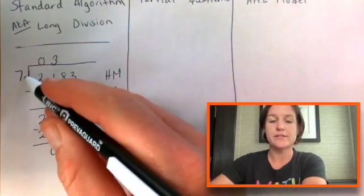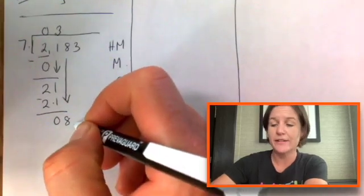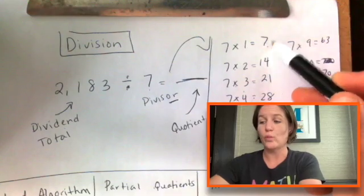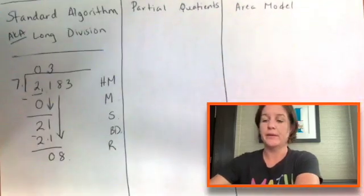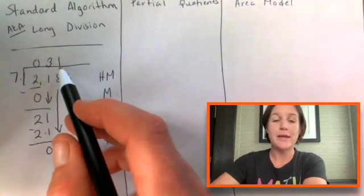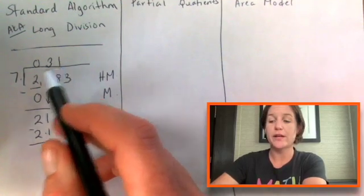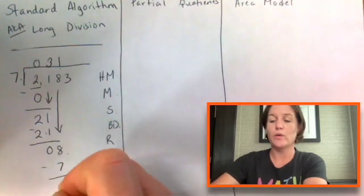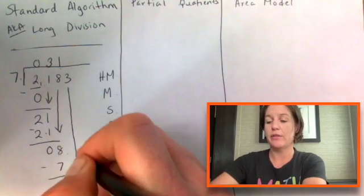How many sevens does it take to get as close as we can to eight? If we go to our chart, as close as we can get is seven. That's one time. So we're going to put times one. That's how many. Now we're going to multiply one times seven is seven. Subtract is one. Bring down the three.